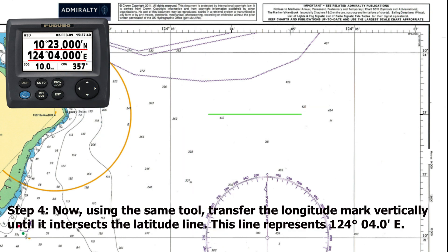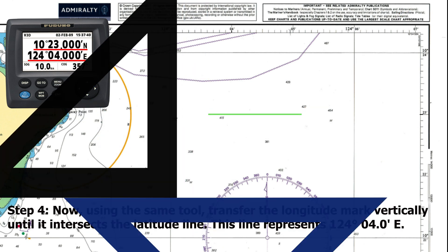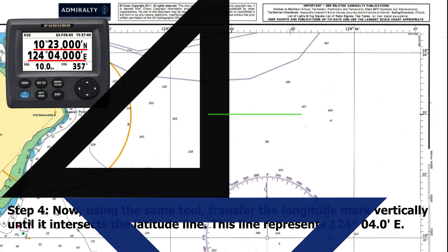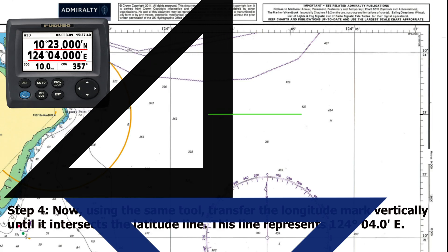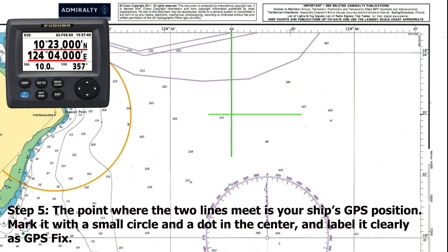Step 4: Now, using the same tool, transfer the longitude mark vertically until it intersects the latitude line. Step 5: The point where the two lines meet is your ship's GPS position. Mark it with a small circle and a dot in the centre, and label it clearly as GPS fix.